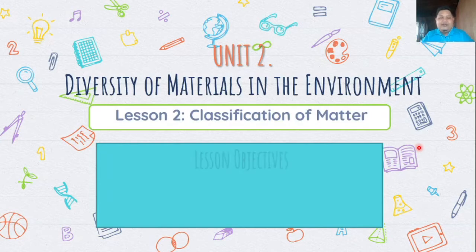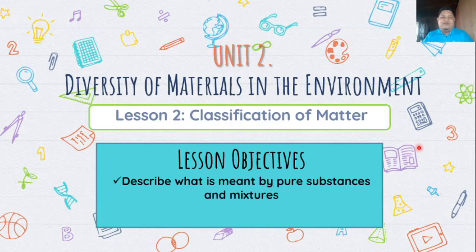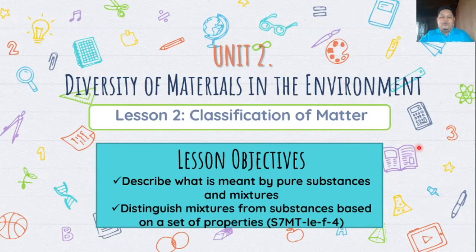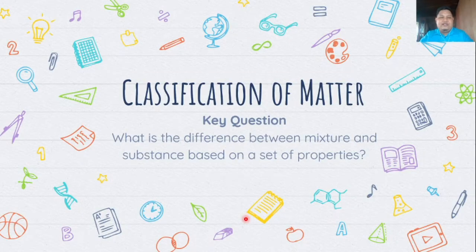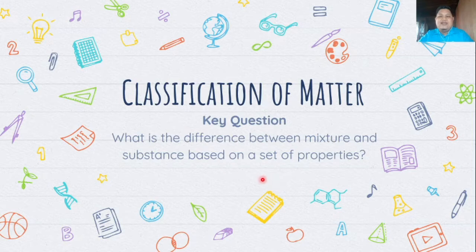So what are the learning objectives that we need to attain at the end of this lecture video? First, we are going to describe what is meant by pure substances and mixtures. And we are going to distinguish mixtures from pure substances based on a set of properties. Now let us proceed to our key question. Please keep in mind to answer this question as we progress: what is the difference between mixture and substances based on a set of properties? At the end of this lesson video, we are going to answer this question.